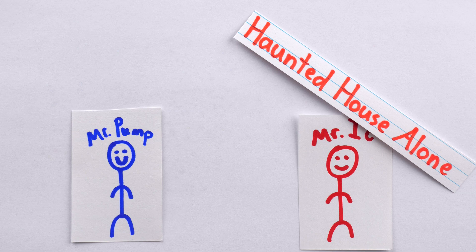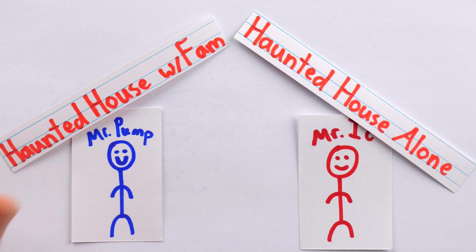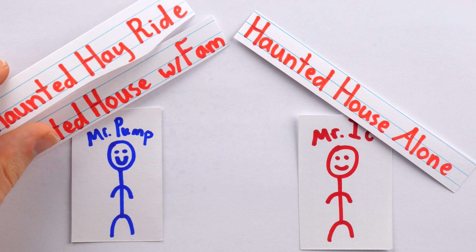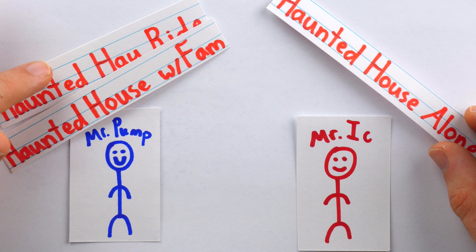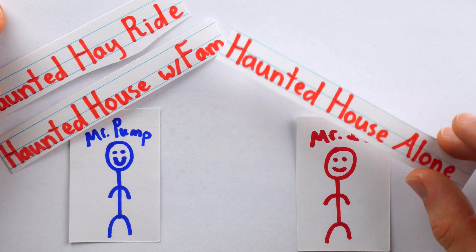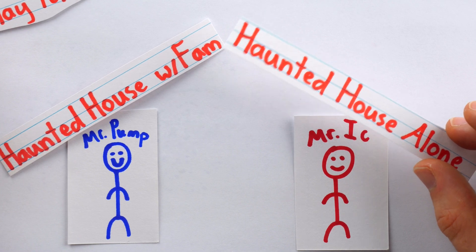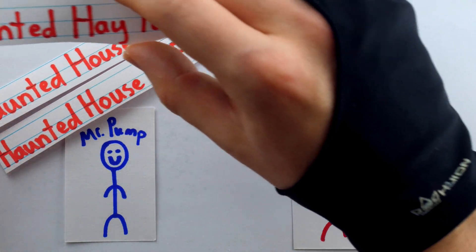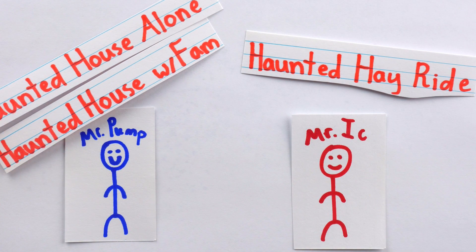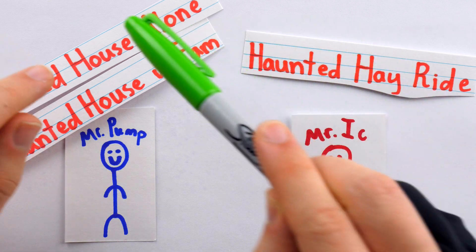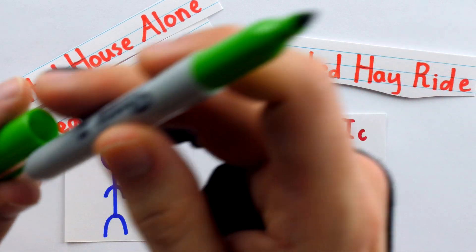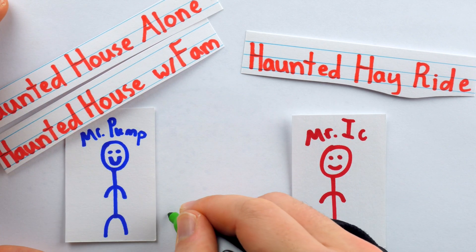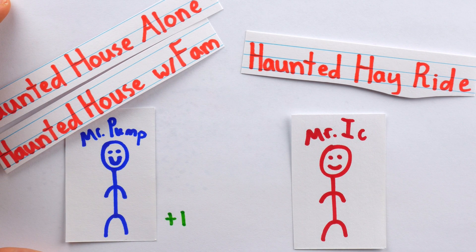Let's say Mr. Ick has a ticket to go to the haunted house alone — he's shaking in his boots but excited for the opportunity. Mr. Pump, in preparation for his devious plan, has acquired tickets for bringing your family to the haunted house and a ticket for the haunted hayride. Mr. Ick actually preferred the haunted hayride to going to the haunted house alone, so he's willing to give Mr. Pump the solo haunted house ticket and some money in exchange for the haunted hayride — plus one unit of money for Mr. Pump — in exchange for his preferred option, the haunted hayride.